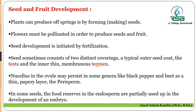The nucellus is the nutritive part in the ovule. In some genera like black pepper and beet, the nucellus persists and adds a thin papery layer called the perisperm. The endosperm inside the seeds plays a significant role as it stores the reserve of food material used in the development of the embryo.